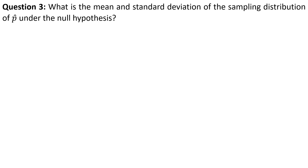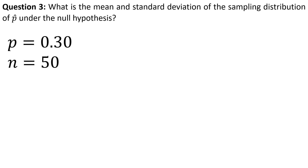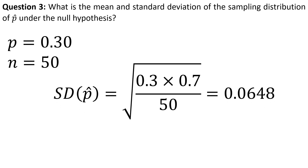Next, we're going to calculate the standard deviation of the sampling distribution. Under the null, the mean of the sampling distribution is 0.30. We have a sample size of 50, and so we can use those numbers to calculate our standard deviation. We get something just a bit more than 6%.